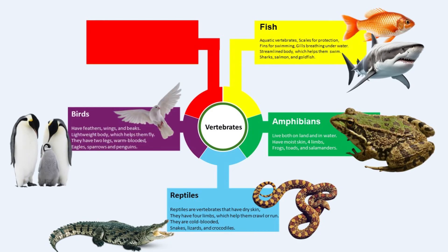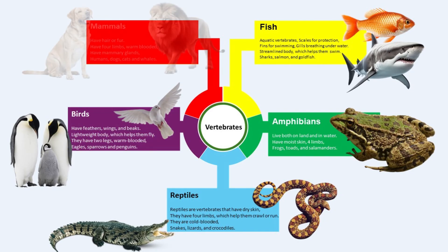Birds are vertebrates that have feathers, wings and beaks. They have a lightweight body which helps them fly and two legs which help them walk. They are warm-blooded, which means they can generate their own body heat. Some examples of birds are eagles, sparrows and penguins.